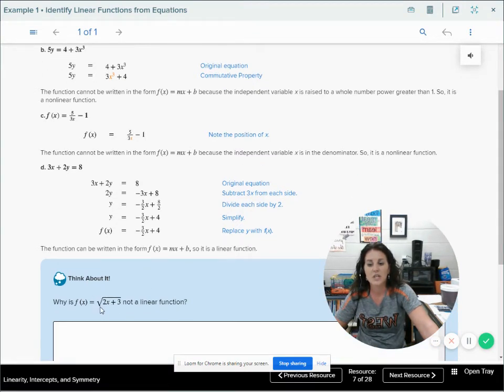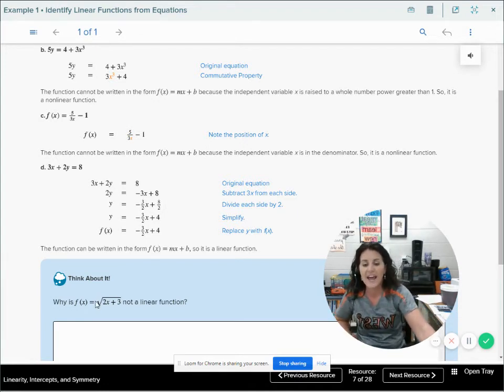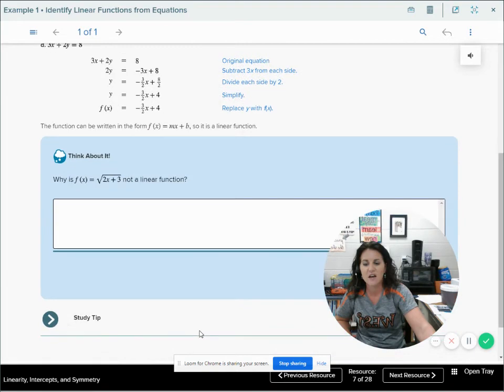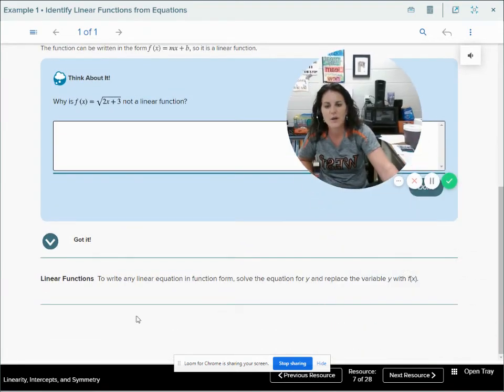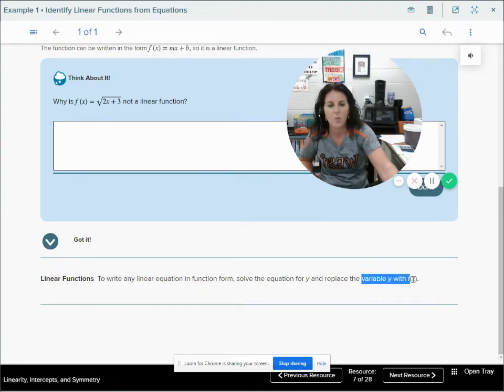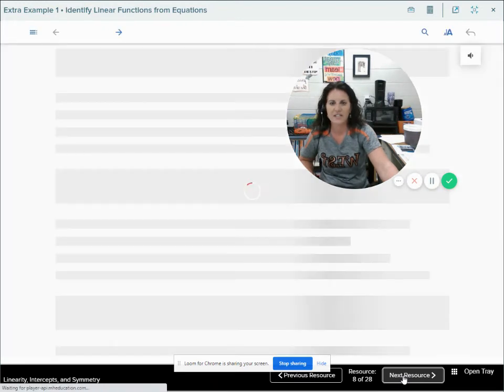Be sure that you remember the square root is the same as having all of that raised to the 1 half power. So that is not a linear function. And this study tip: to write any linear equation in function form, solve the equation for y and replace the variable y with f(x). That's writing it in function form. That y and f(x) mean the same thing.